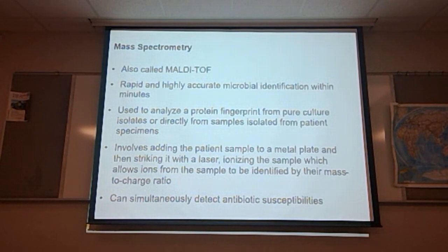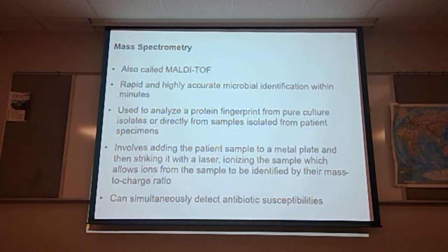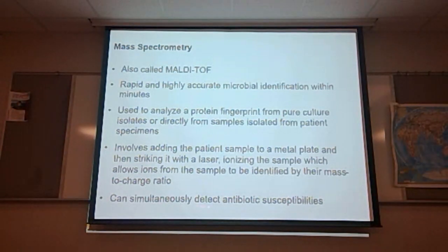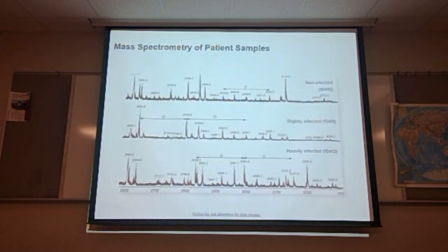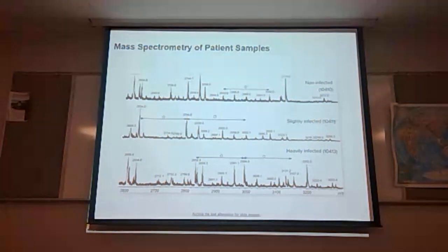Mass spectrometry is a rapid and highly accurate microbial identification method that produces results within minutes. It analyzes a protein fingerprint from pure culture isolates or directly from patient specimens, by adding the sample to a metal plate and striking it with a laser. The laser ionizes the sample, allowing ions to be identified by their mass-to-charge ratio. It can simultaneously detect antibiotic susceptibilities. Different peaks on the mass spec chart represent different organisms, and comparisons can be made between non-infected and infected patients.